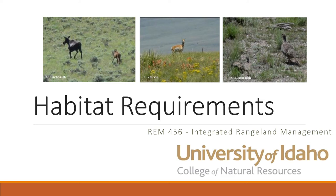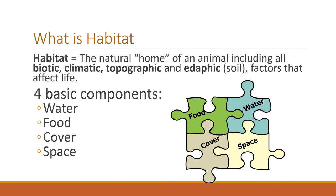Rangeland management is a lot about habitat management — habitat management for wildlife and for livestock. In today's discussion on integrated rangeland management, we'll talk about habitat requirements of animals and how we might manage those. Habitat is the home of an animal, and it includes biotic factors such as food, other animals, and microbes, as well as abiotic factors such as climate and topography, and edaphic factors which are soil. All of those affect the life and home of an animal — those are elements of habitat at the most basic level.